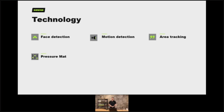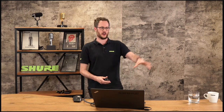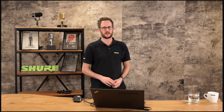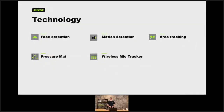We can have a pressure mat on the stage. This is a bit more of an older style technology but it does exactly what it says — it will manage and measure pressure across an area. You will have various presets within your camera so that when pressure is detected in the front left of the stage it recalls camera preset number one, when you feel pressure at the back right it recalls camera preset number two, and so on.